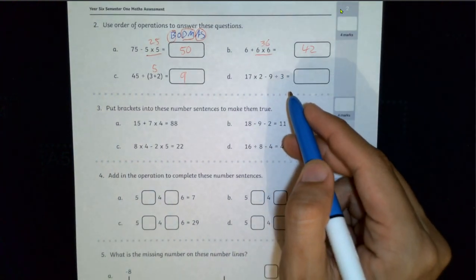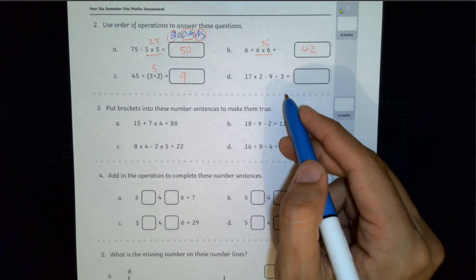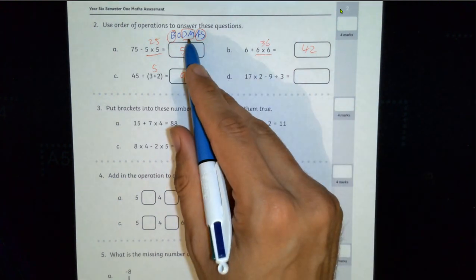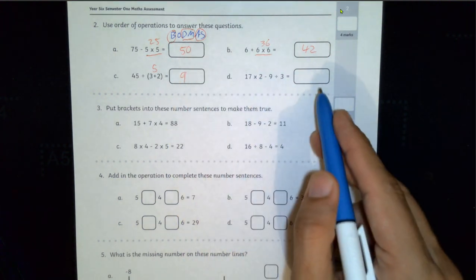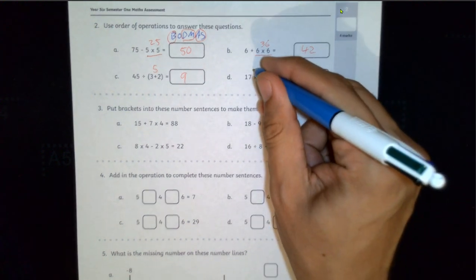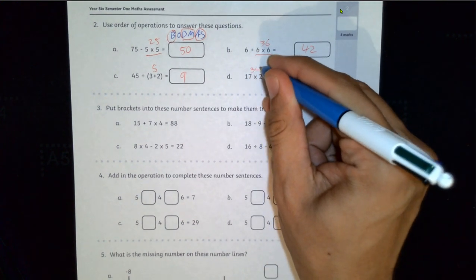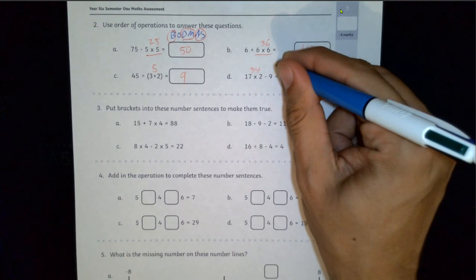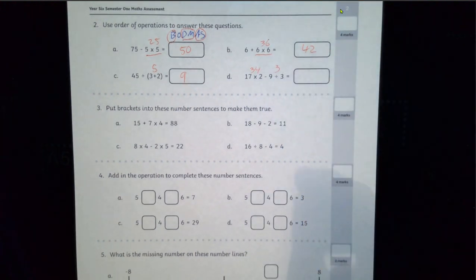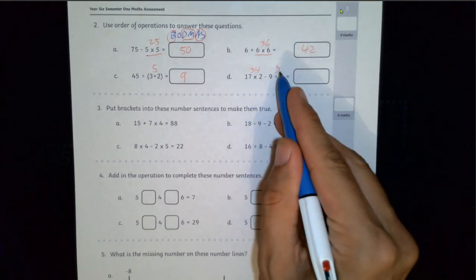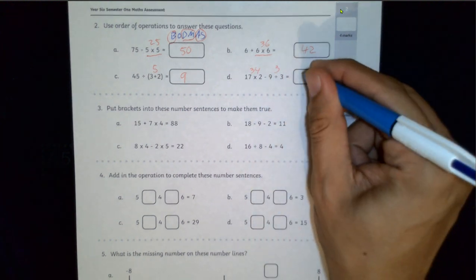Next one, so we've got a fair bit of stuff going on. For division and multiplication they're both in the same category, so you just have to work from left to right. 17 times 2 is 34, 9 divided by 3 is 3. Now you do subtraction, 34 take 3, 31.